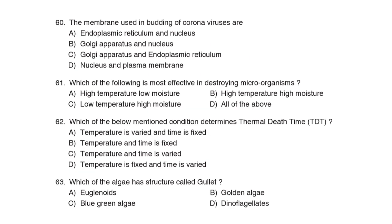60th Question: The membrane used in the budding of coronavirus is Correct Answer: Option C: Golgi apparatus and endoplasmic reticulum. 61st Question: Which of the following is most effective in destroying microorganisms? Correct Answer: Option A: High temperature, low moisture.